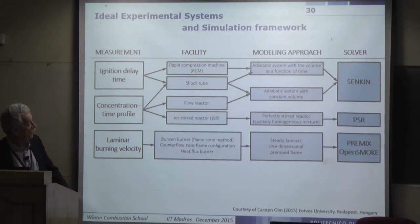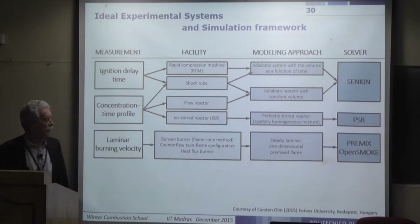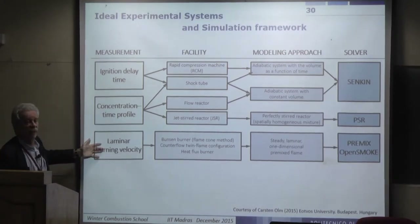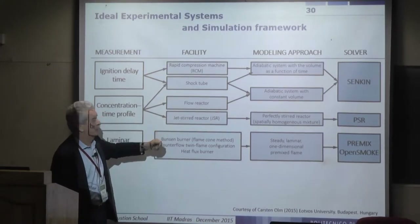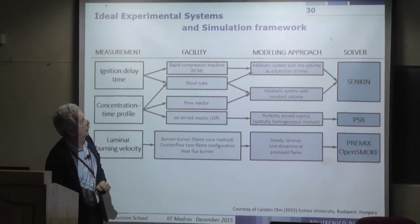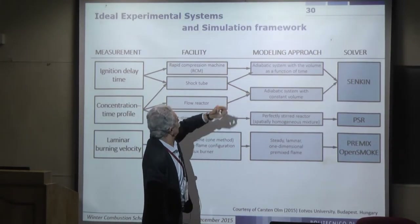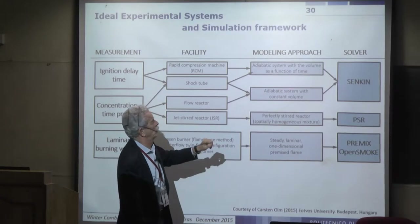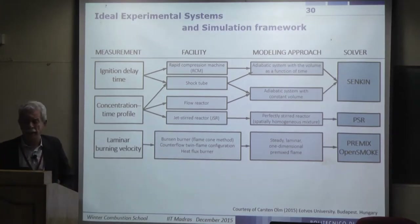To summarize the ideal experimental systems and simulation frameworks: measurements include ignition delay time, concentration profiles, and laminar burning velocity. Facilities include rapid compression machines, shock tubes, flow reactors, jet stirred reactors, and various flames. Modeling approaches include adiabatic systems with or without facility effects at constant volume, solved using tools like CHEMKIN, OpenSMOKE, or others.